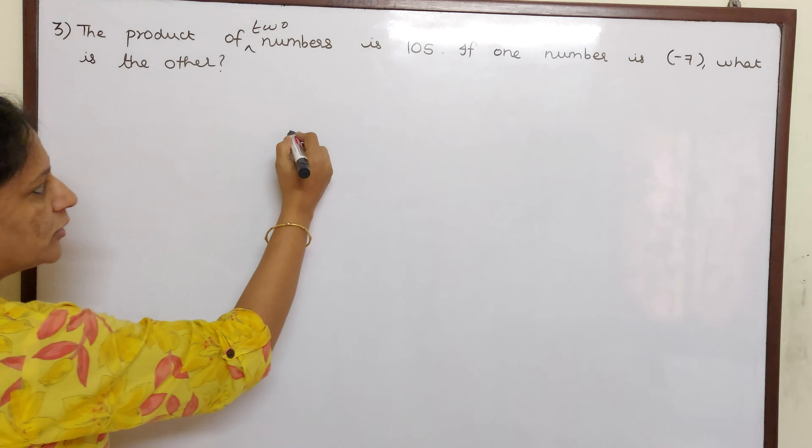If one number is minus 7, that means out of these two numbers, one number is given, what is the other? We don't know what is the other. So let us assume the other number to be X. So let the other number be X.